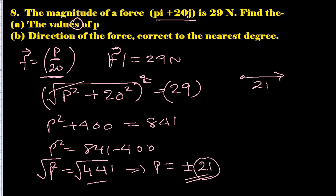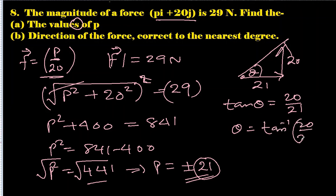Direction of the force correct to the nearest degree. Since we know this is now 21, let's take the positive one first. So it goes in x direction 21 positive, and positive 20 which is upwards.